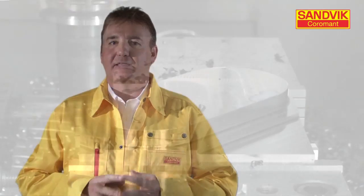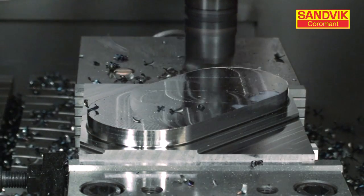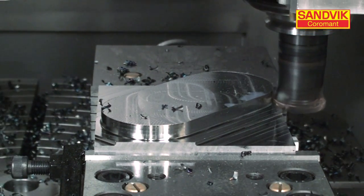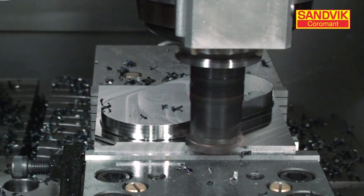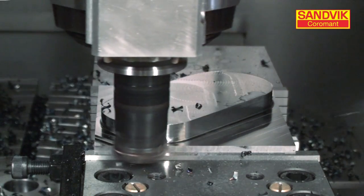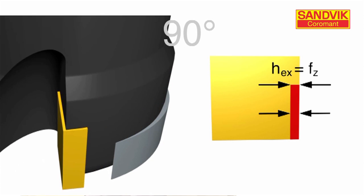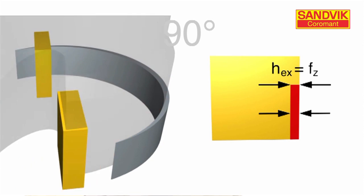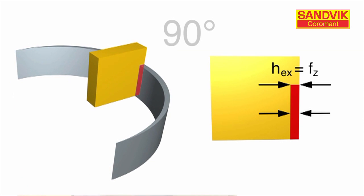A square shoulder cutter produces the majority of its cutting forces in the radial direction, making this design best suited for not only generating a square shoulder, but machining components where vibration could be an issue. With a square shoulder cutter, you get no chip thinning effect — the programmed feed rate per tooth is exactly equal to the actual chip thickness.